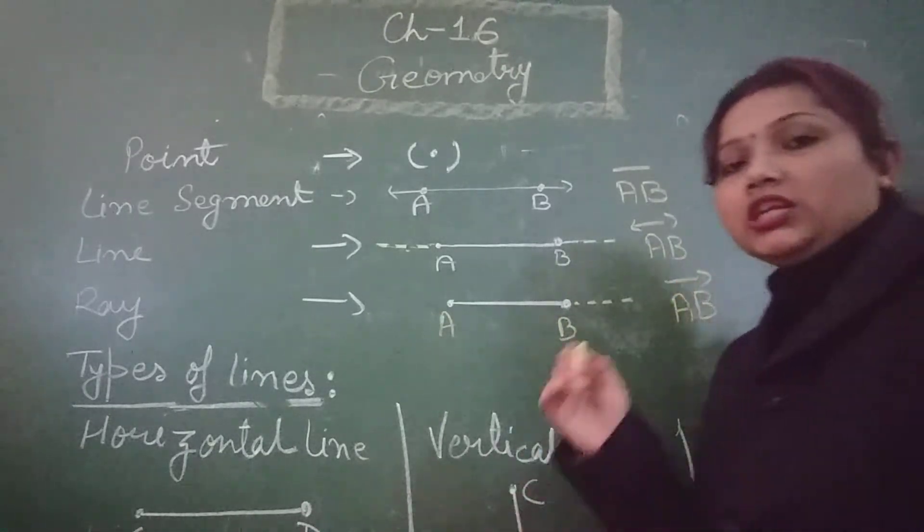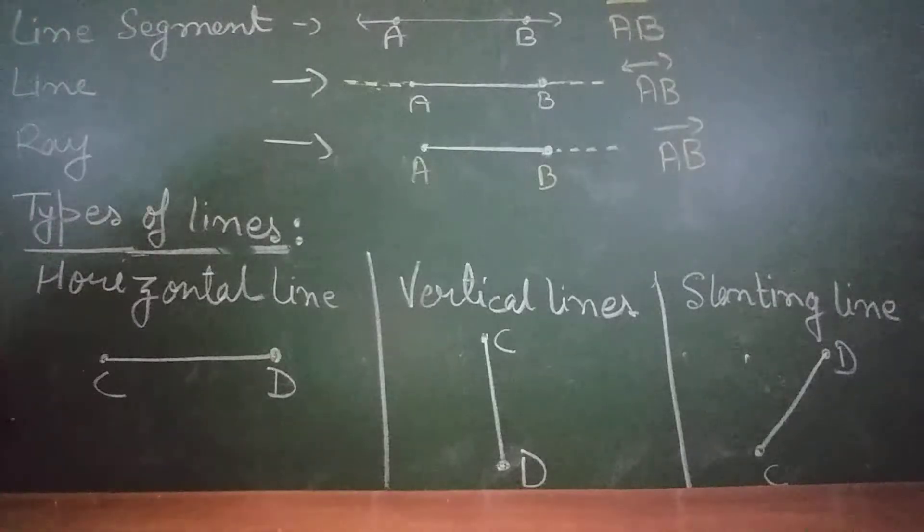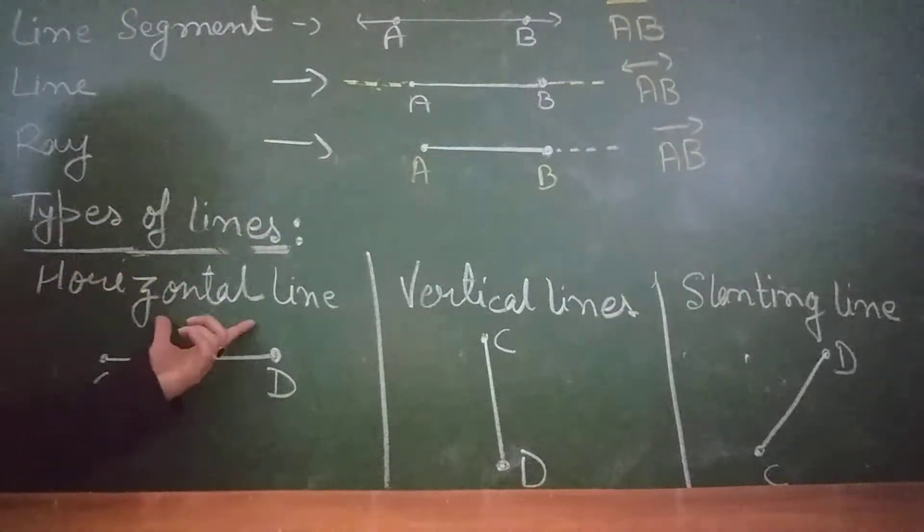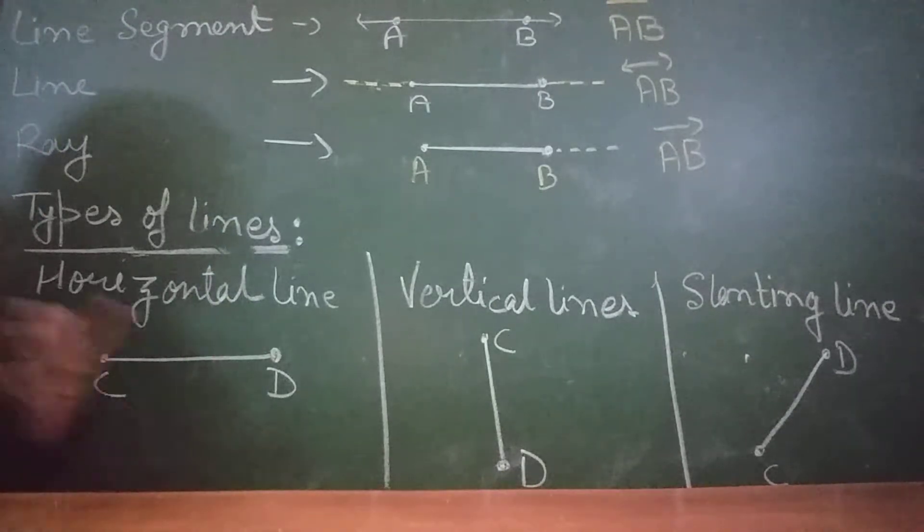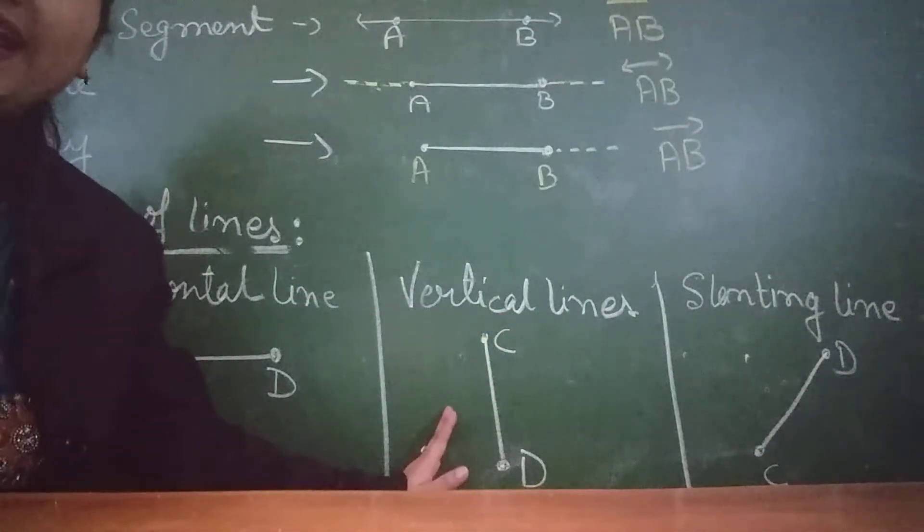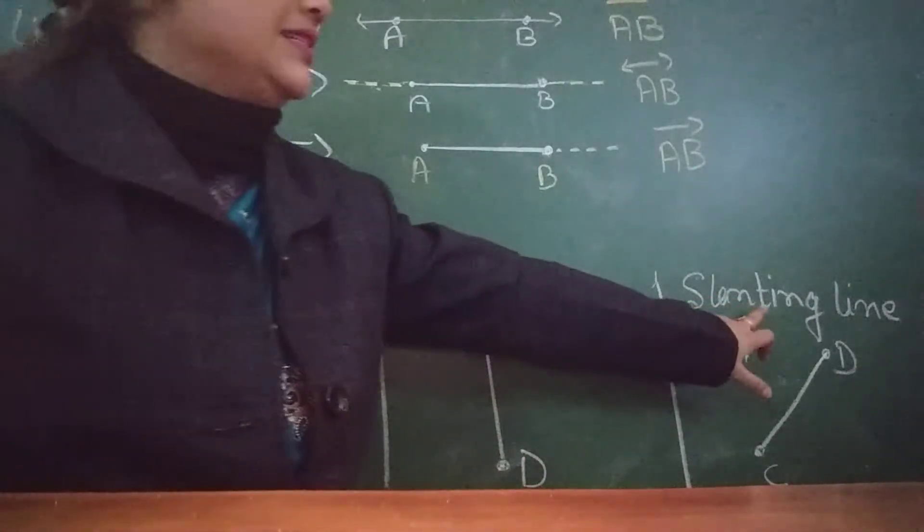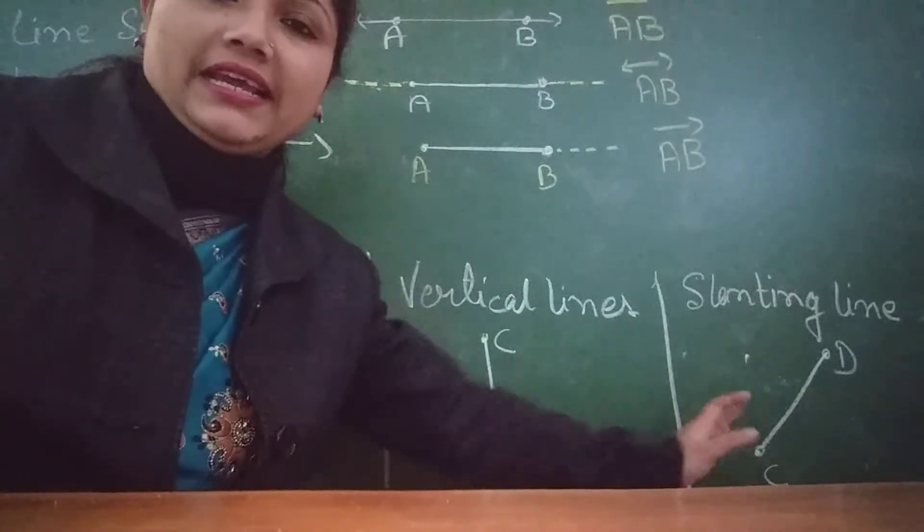Now, see the different types of lines. Types of lines. Horizontal line. Horizontal line is placed along the ground. It is also known as the sleeping line. Vertical line. The line standing upright is known as the vertical line. Slanting line. It is also known as the oblique line.